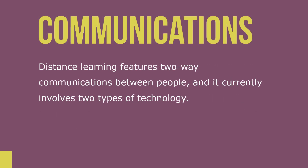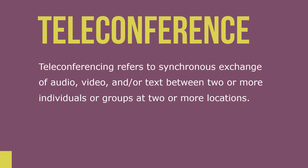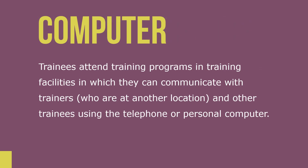Distance learning features two-way communications between people and currently involves two types of technology. Teleconferencing refers to synchronous exchange of audio, video, and or text between two or more individuals or groups at two or more locations. Trainees attend training programs in training facilities where they can communicate with trainers at another location and other trainees using the telephone or a personal computer. The second type also includes individualized, personal computer-based training.